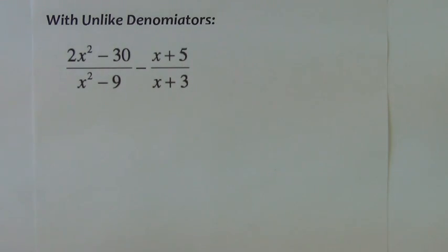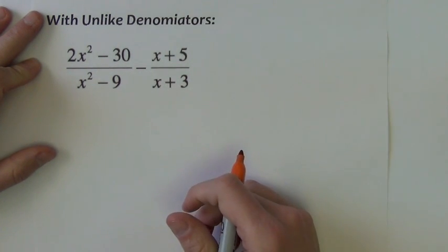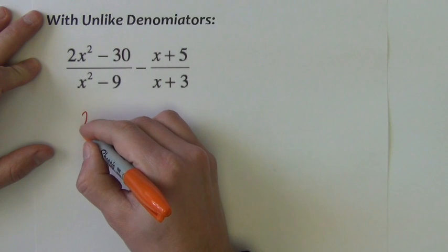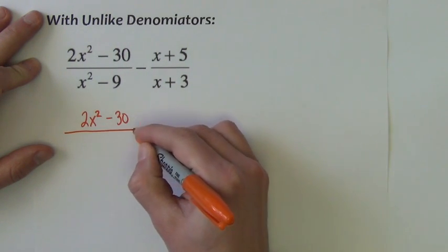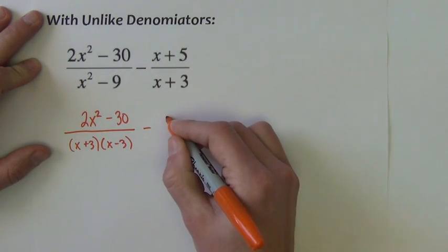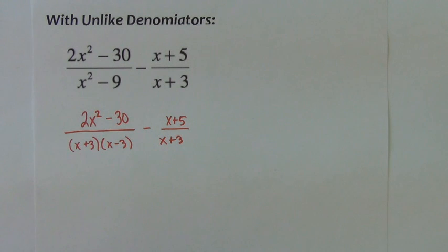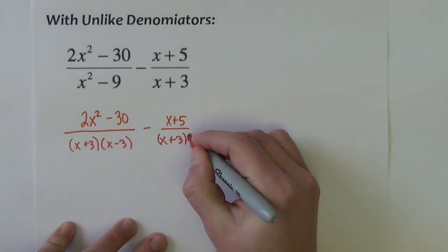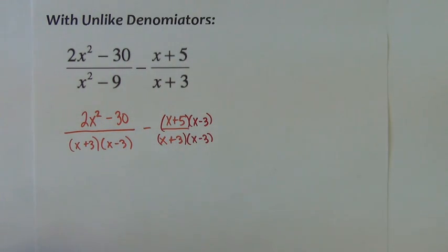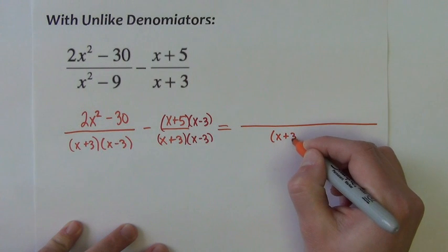I have one more example of combining fractions with unlike denominators. If you'd like to pause it here to try this on your own, you certainly can. And then you can resume once you're done and see if you've got it correct. Factoring the denominators completely first. So we've got 2x squared minus 30 over x squared minus 9 is x plus 3, x minus 3. Minus this is x plus 5 over x plus 3. Okay, well I see that they share x plus 3 in common. This second fraction needs an x minus 3. And if I put one on bottom, I've got to put one on top.